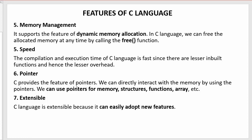The next feature is pointers. C provides the feature of pointers — we can directly interact with the memory using pointers. With the help of pointers, we can access data using the address of memory locations. We can use pointers for memory structures, functions, and arrays. We can use pointers in dynamically allocating memory locations, storing data in the form of structures, calling functions, and storing data in arrays. There are numerous uses of pointers in C.